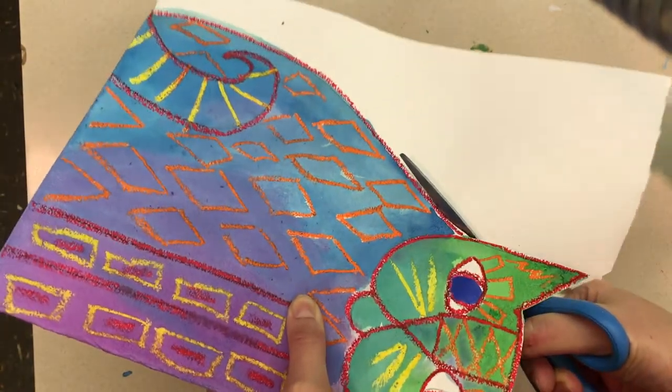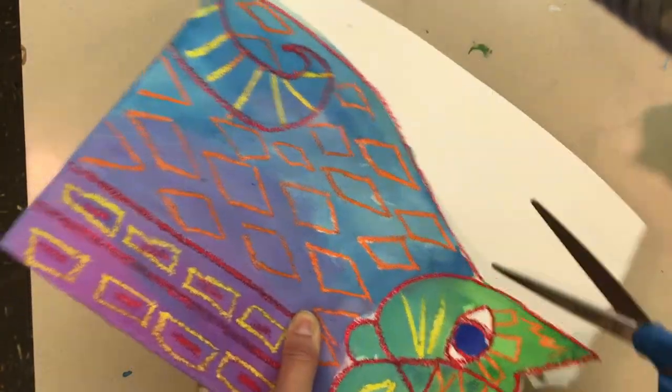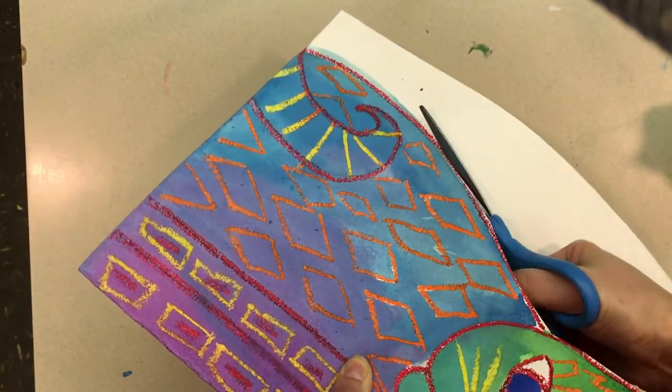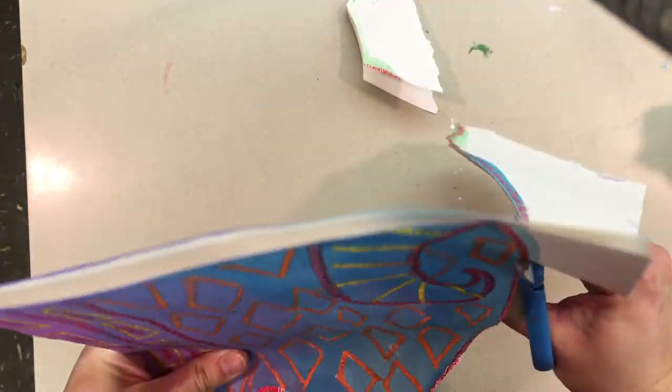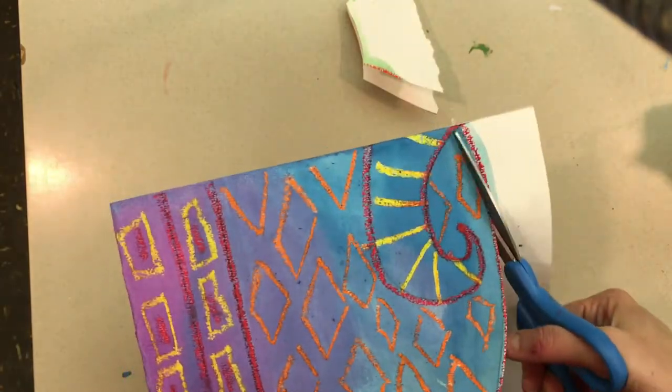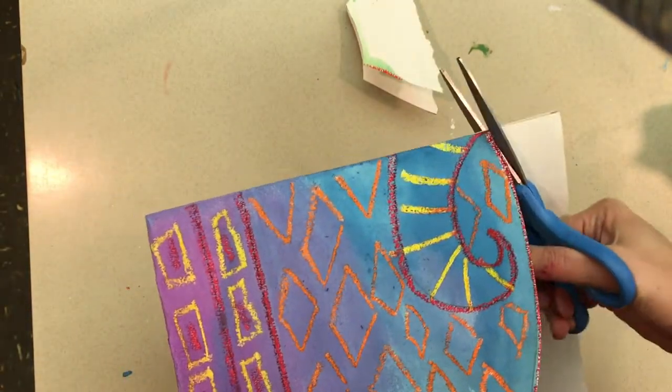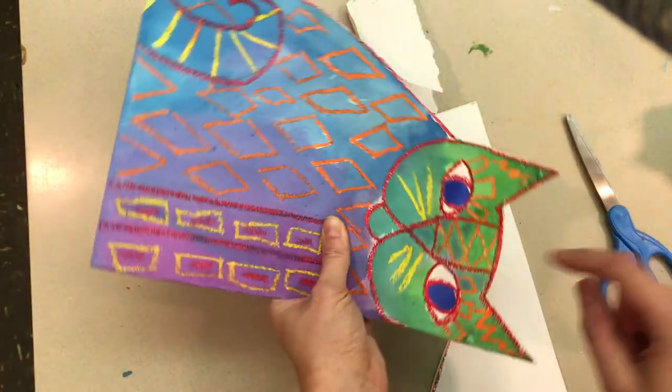Make sure you continue to hold the fold. Do not let go of the fold. I use the back of my scissors. I don't let the tops of my scissors really touch and I'm making sure that I'm cutting through two pieces of paper.